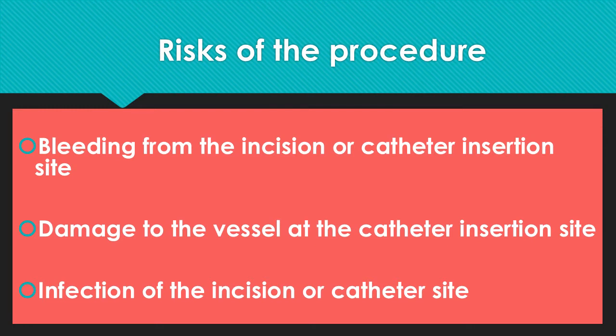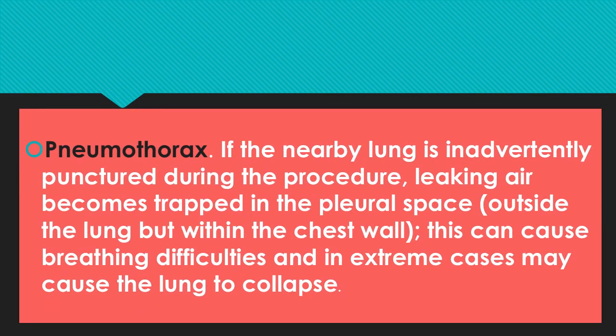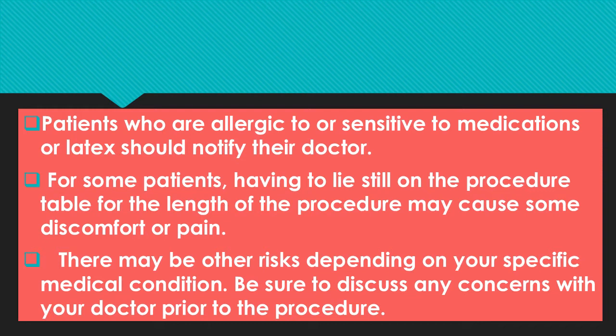Risks of the procedure: there may be bleeding from the incision or catheter insertion site, and if not properly visualized, there may be damage to the vessel. There may also be infection at the incision site. Pneumothorax may occur if the lung is inadvertently punctured during the procedure, trapping air in the pleural space. The patient may be allergic to certain medications. The length of the procedure — typically 3 to 5 hours — may cause patient discomfort. There may be other risks depending on specific medical conditions and comorbid factors, which should be discussed with the cardiologist.